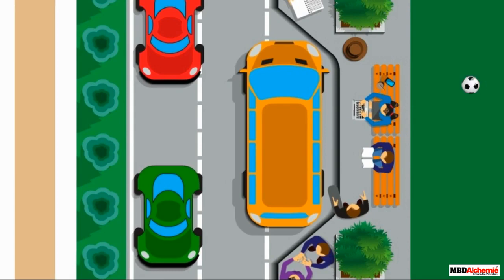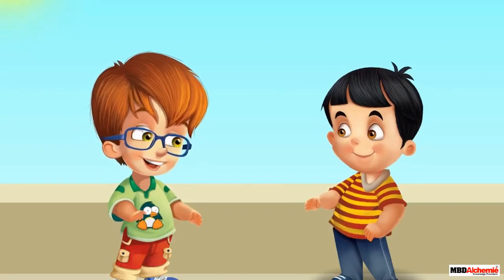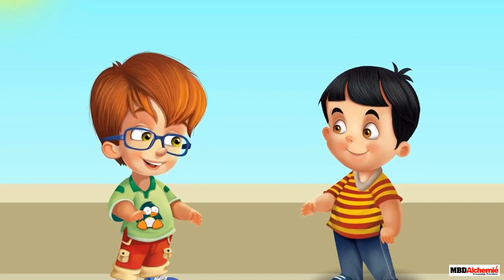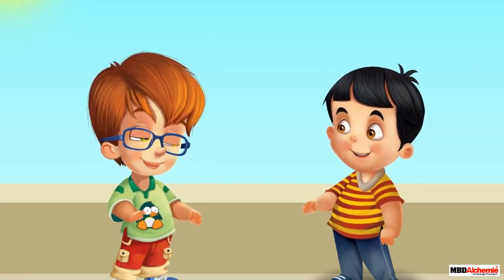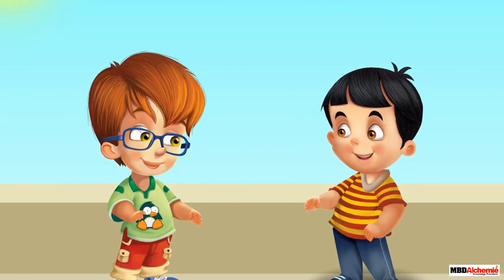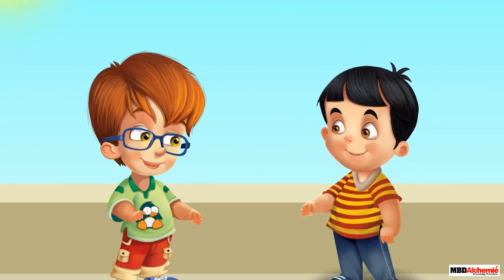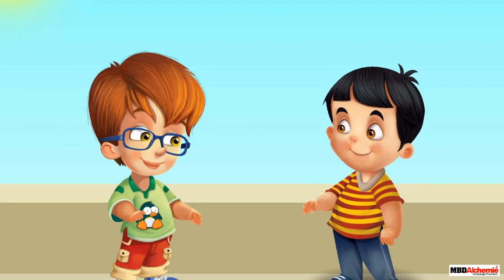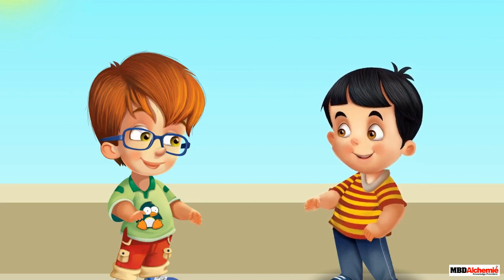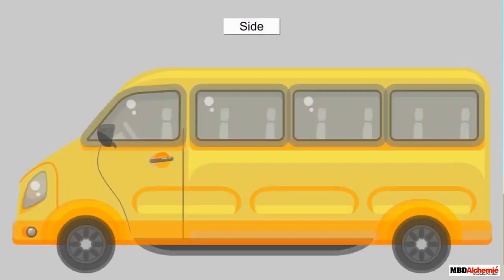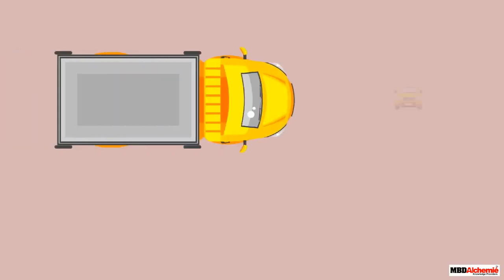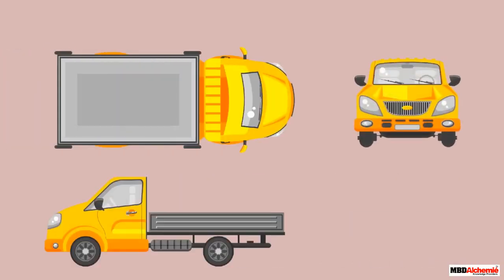They also notice that everything looks different from the top. Neil asks Sid why the bus looks so different from the terrace. Sid tells him that it is the top view of the bus — things look different when looked at from different views. A bus looks different when viewed from the top, front, and side. Various 3D objects look different when looked at from different views. Let's watch different views of objects that we see in our everyday life.